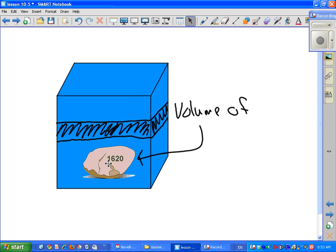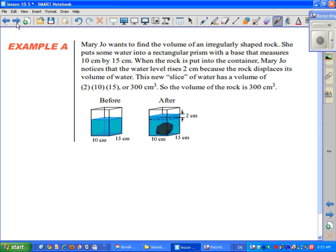So if you can find the volume of that slice of water right here, then you will find the volume of that rock. That is called displacement and that is how you find the volume of all these shapes that are odd.